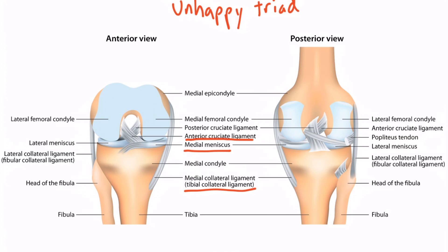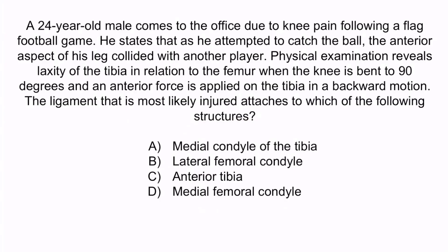Let's do a question to help solidify this information. A 24-year-old male comes to the office due to knee pain following a flag football game. He states that as he attempted to catch the ball, the anterior aspect of his leg collided with another player. Physical examination reveals laxity of the tibia in relation to the femur when the knee is bent to 90 degrees and an anterior force is applied on the tibia in a backward motion. The ligament that is most likely injured attaches to which of the following structures? A, medial condyle of the tibia. B, lateral femoral condyle. C, anterior tibia. Or D, medial femoral condyle.